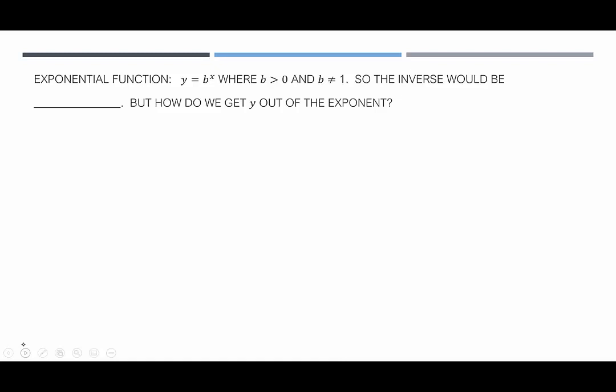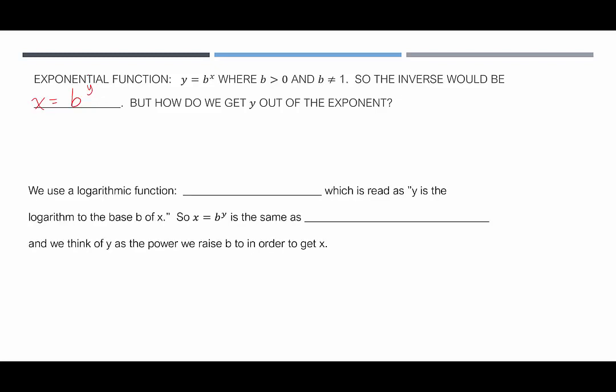The inverse of an equation is when you switch x and y, so it would be x equals b to the y. When we write the inverse of a function, we want to get y by itself. So how do we get y out of the exponent? We can't multiply both sides by y — that's not going to get y out of the exponent. This is why we have the logarithmic function.